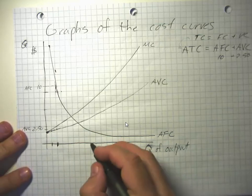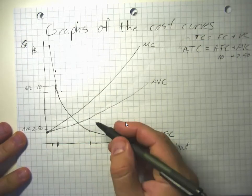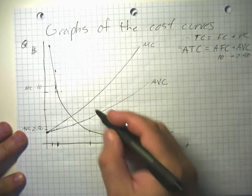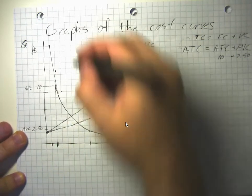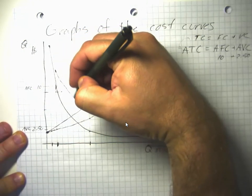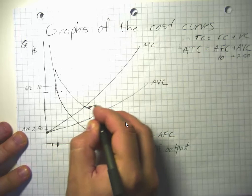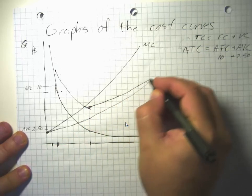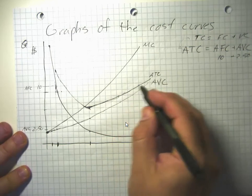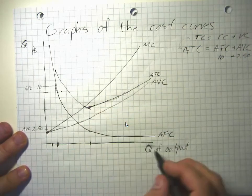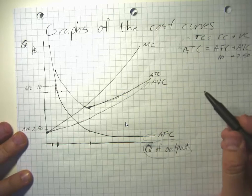Later on, suppose average fixed cost per unit is $2.00 and average variable cost per unit is a little over $4.00. We stack average variable cost and average fixed cost to get average total cost. As we move to large amounts of output, average total costs converge to average variable costs, because average fixed cost per unit becomes trivial and average variable cost per unit becomes dominant.